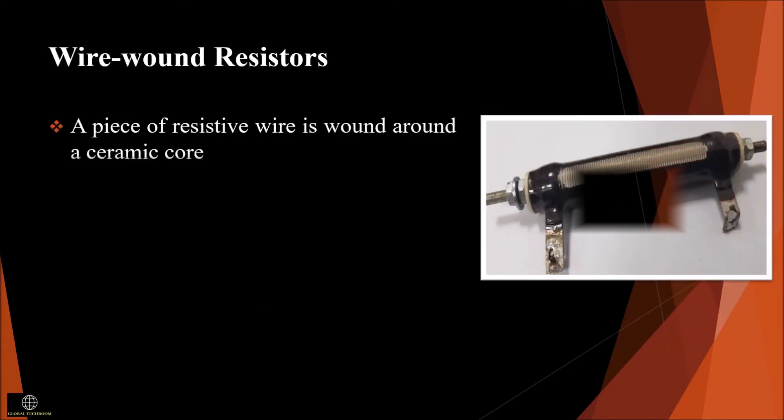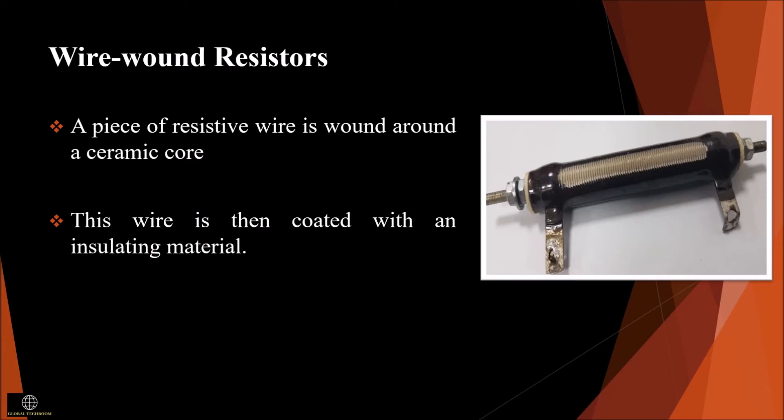In wire wound resistors, a piece of resistive wire is wound around a ceramic core. This wire is then coated with an insulating material. The resistance wire commonly used are tungsten, nickel, and nickel-chromium alloy. These resistors have properties like high power rating and low resistance values. This type of resistor is used for high power applications.